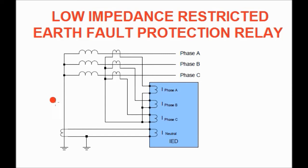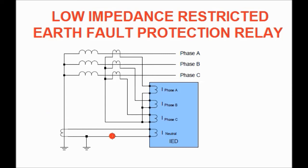The connection is very simple — no high impedance is required and no varistor is needed. The main advantage of the low impedance type restricted earth fault relay is that the connection diagram is very simple, no varistor is required, and there is no calculation needed for resistance values.